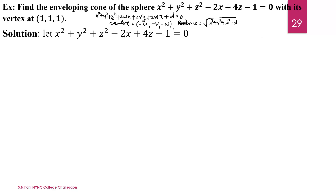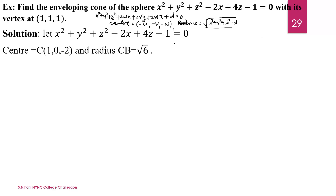The coefficient of Y is absent so V = 0. For Z, 2W = 4, so W = 2. Therefore the center is (−U, −V, −W) = (1, 0, −2). The radius is √(U² + V² + W² − D) = √((−1)² + 0² + 2² − (−1)) = √(1 + 0 + 4 + 1) = √6.